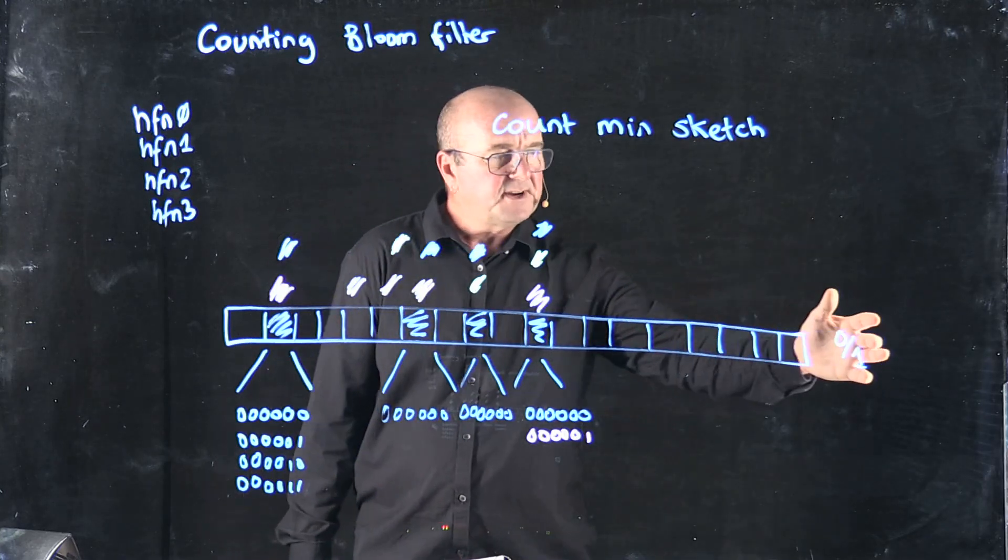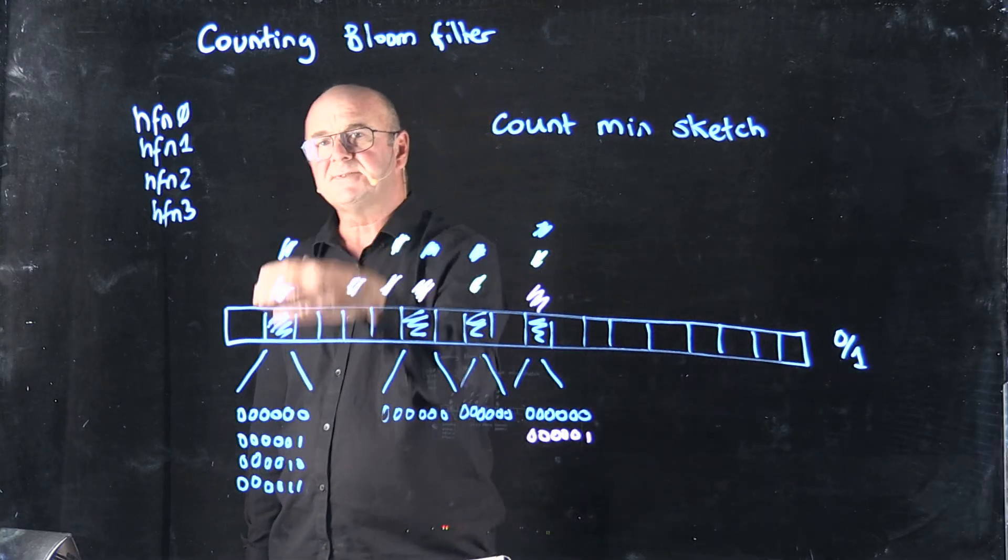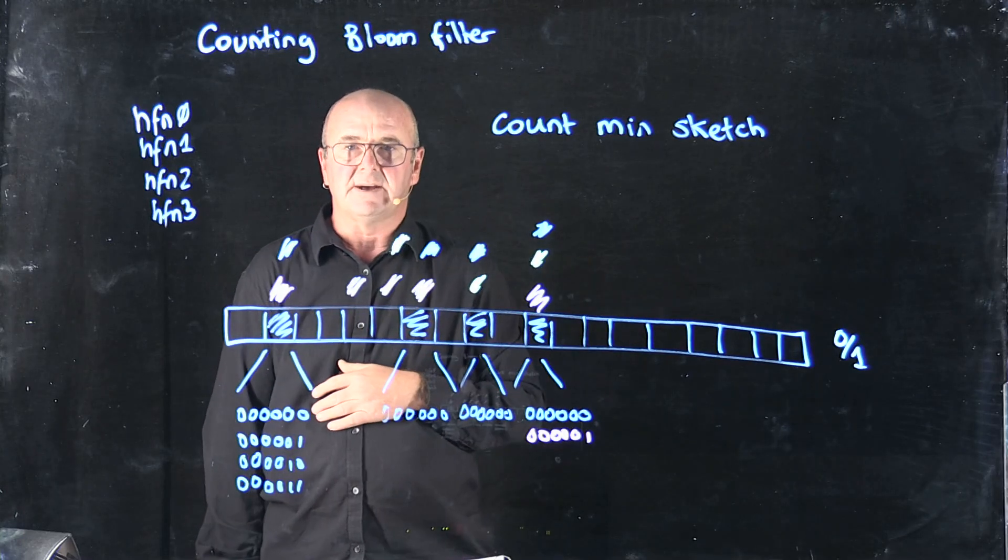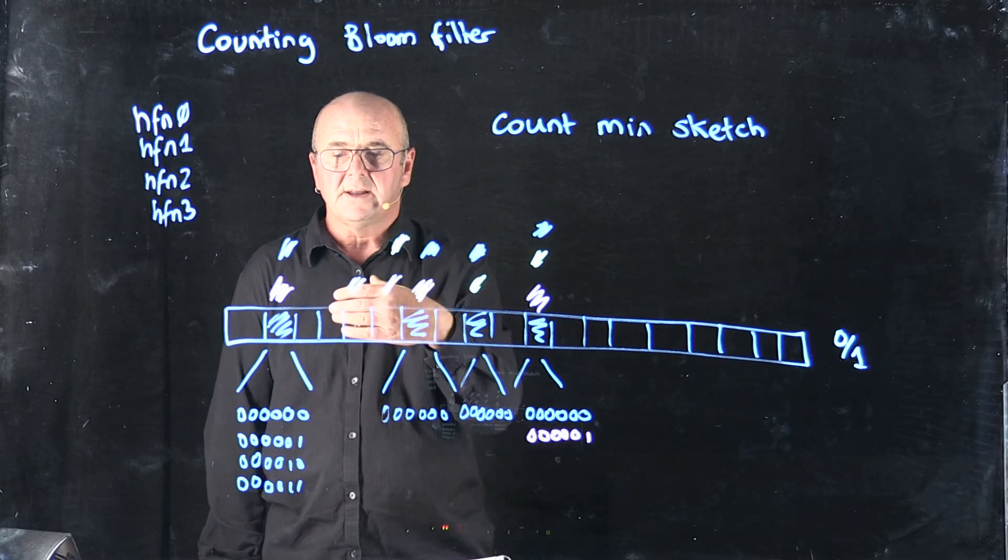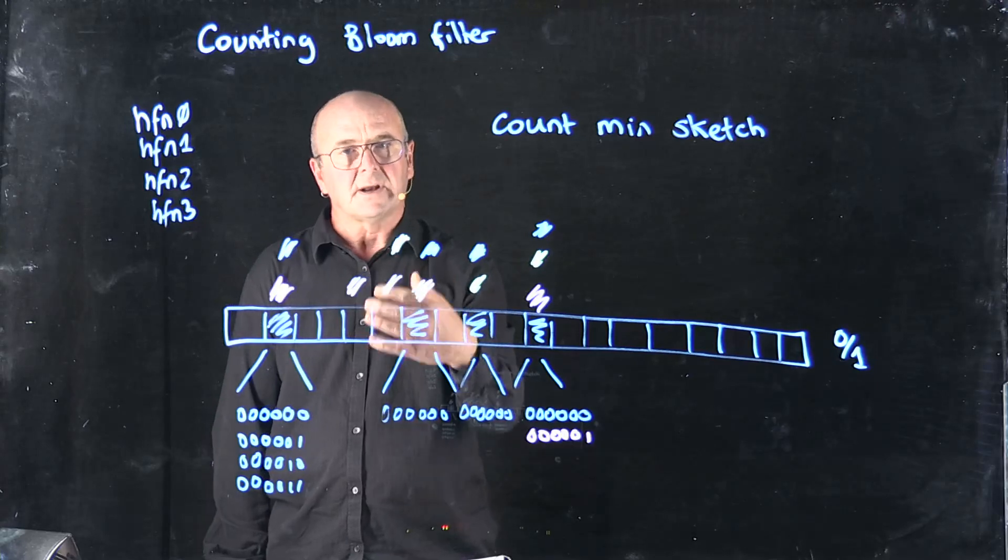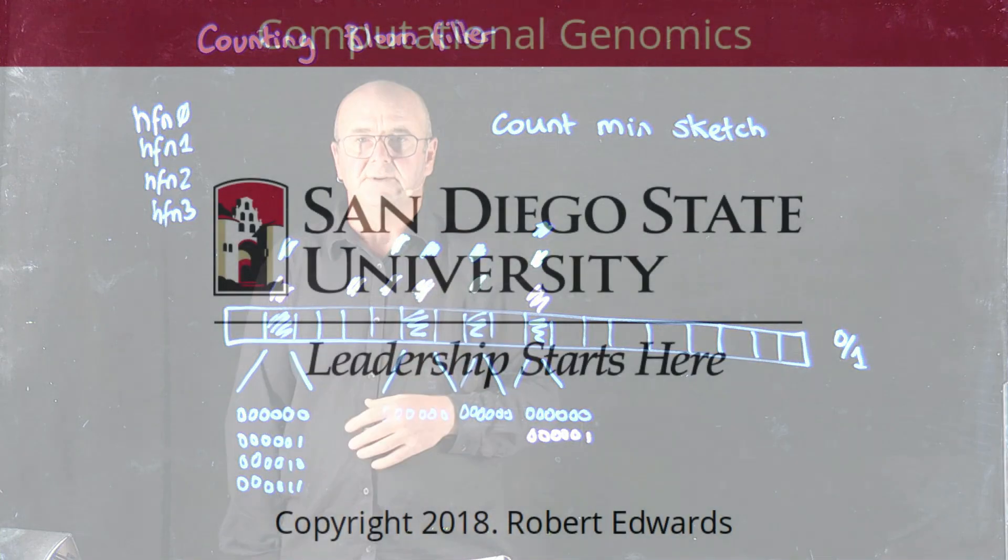However, if you have enough bins and your hash functions are distributing things around avoiding collisions, then the count that you get out will be very close to the frequency of your k-mer.